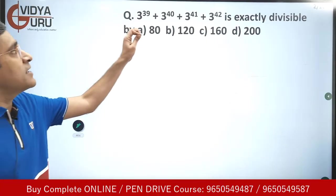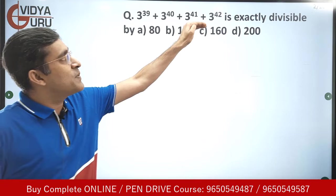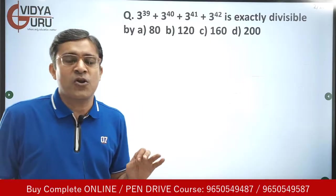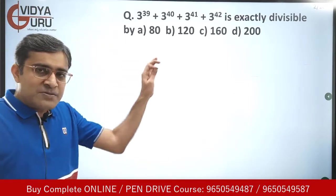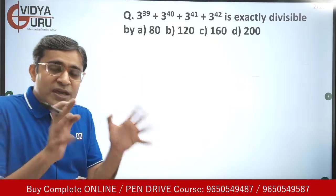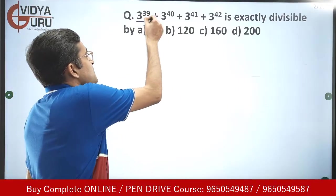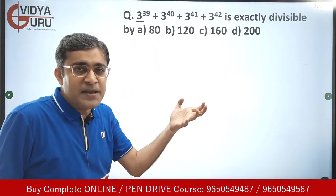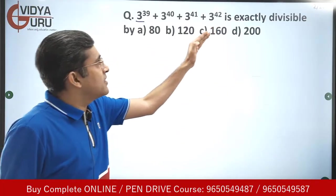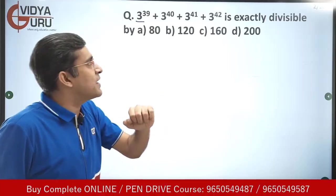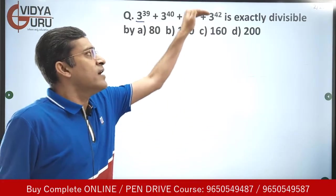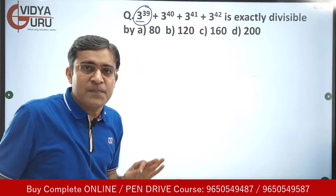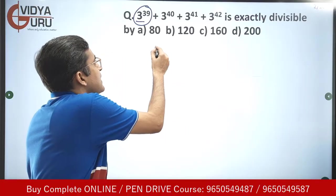The first question says: 3 raised to power 39 plus 3 raised to power 40 plus 3 raised to power 41 plus 3 raised to power 42 — which of the following is this exactly divisible by? It seems to be a difficult question, but we can make it simple. Think of the smallest part: 3 raised to power 39 is present in all the subsequent terms.